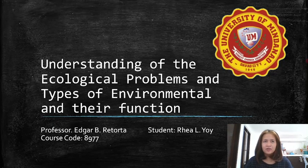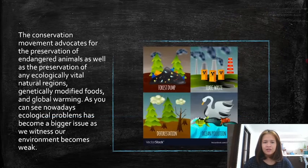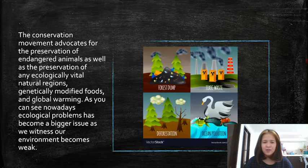Today we're going to discuss the understanding of ecological problems and types of environmental issues and their functions. The conservation movement advocates for the preservation of endangered animals as well as ecologically vital natural regions, genetically modified foods, and global warming. As you can see, nowadays ecological issues have become bigger as we witness our environment becoming weak.